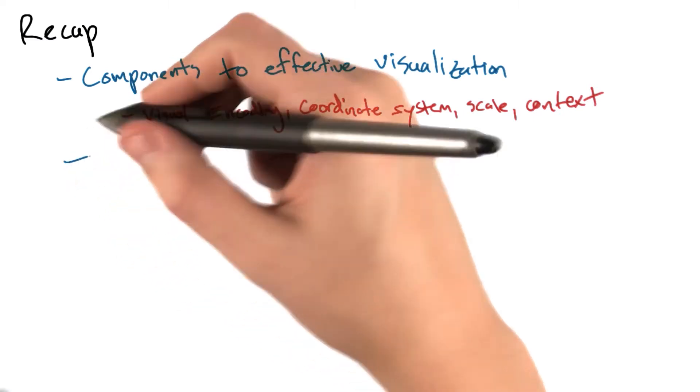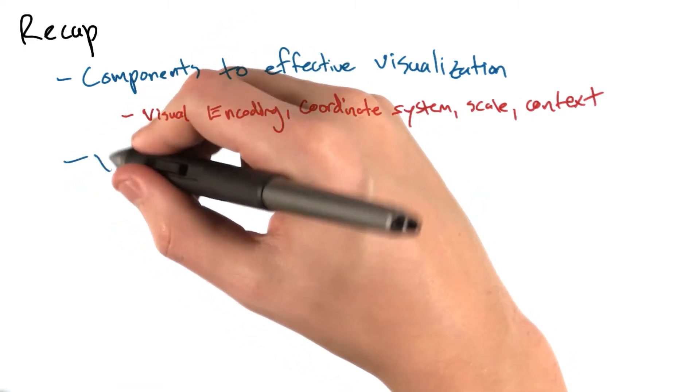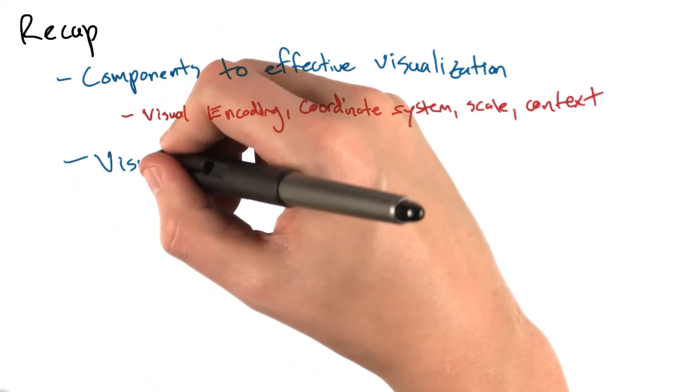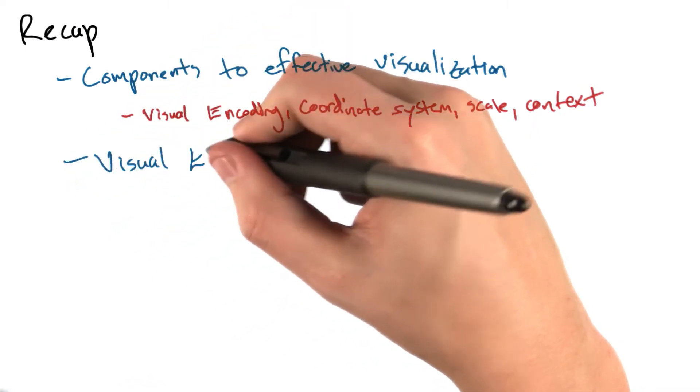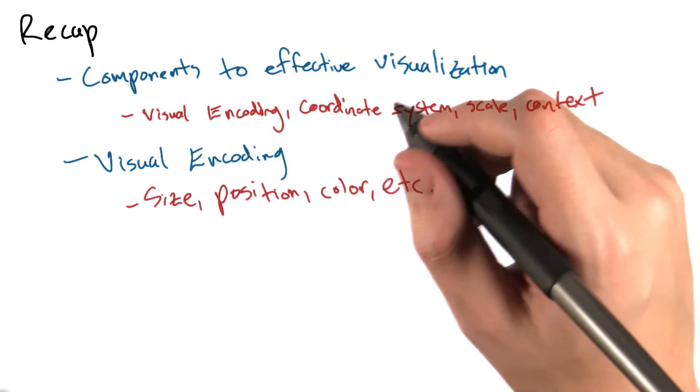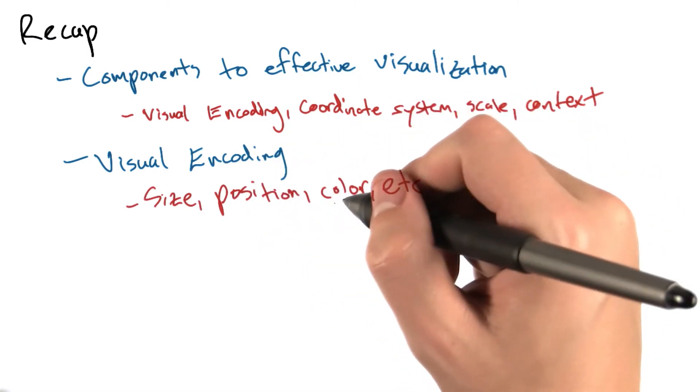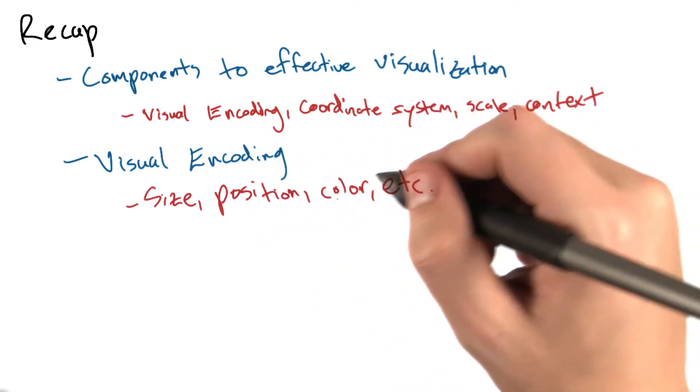After that, we dived a little bit deeper into the various different ways that we can encode data visually. These included size, position, color, and many more.